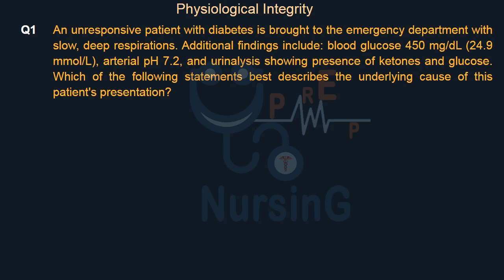Physiological Integrity. An unresponsive patient with diabetes is brought to the emergency department with slow, deep respirations. Additional findings include blood glucose 450 mg/dL (24.9 mmol/L), arterial pH 7.2, and urinalysis showing presence of ketones and glucose. Which of the following statements best describes the underlying cause of this patient's presentation?